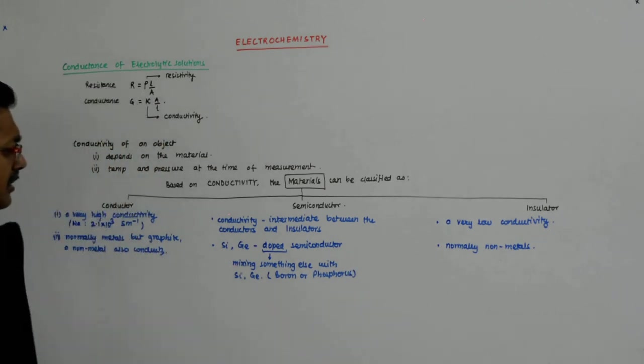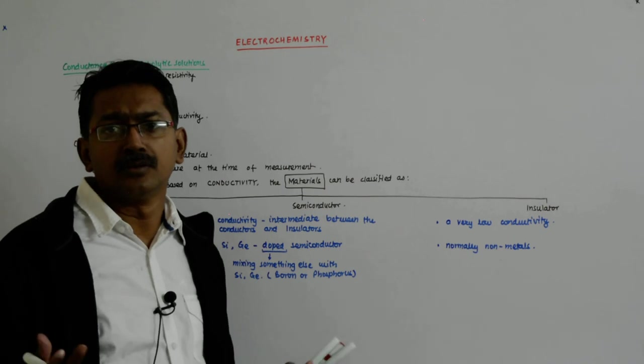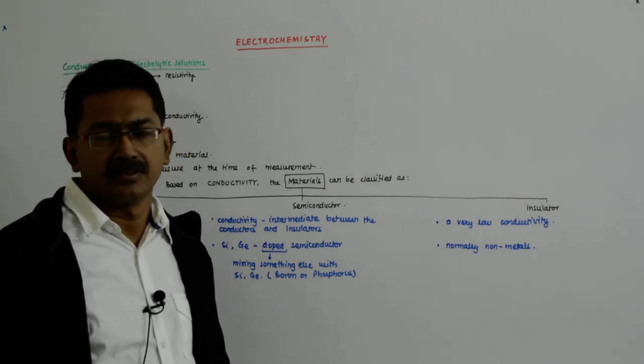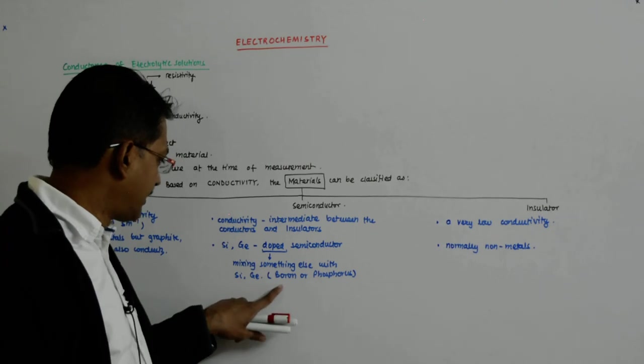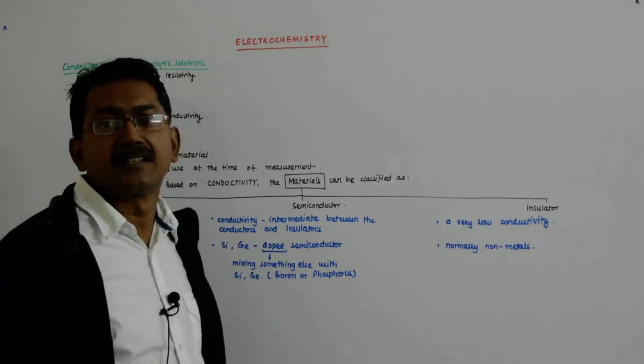We have done in detail how boron or phosphorous when added to a silicon or germanium matrix leads to here the p-type semiconductor and this leads to an n-type semiconductor.